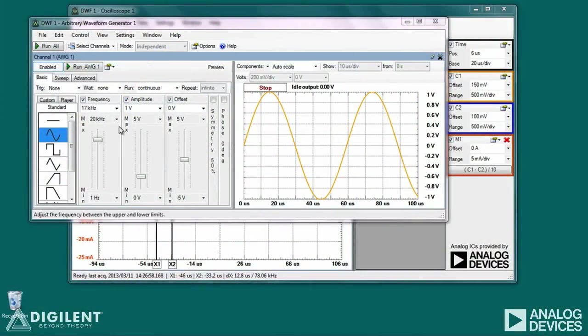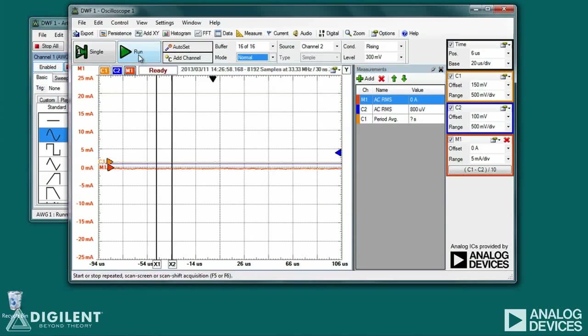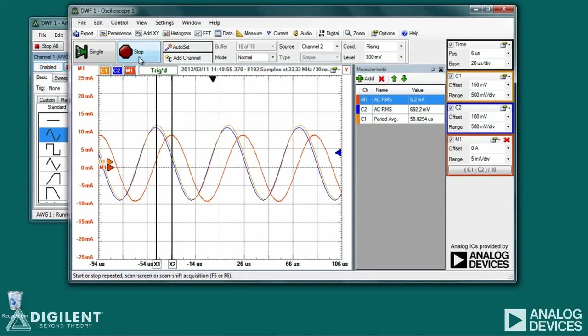I've set up the waveform generator to create my desired 17 kilohertz signal with a 1 volt amplitude. I'll click run to start applying voltage. We'll start acquiring data with the oscilloscope.